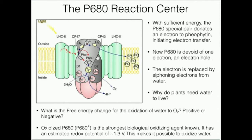The main initiation of all the reactions in photosystem II is in what's called the P680 reaction center. The P680 gets its name from the fact that it absorbs light of 680 nanometers. As shown in the picture over to the left, it does absorb light. This is just the basic background of the P680 reaction center.